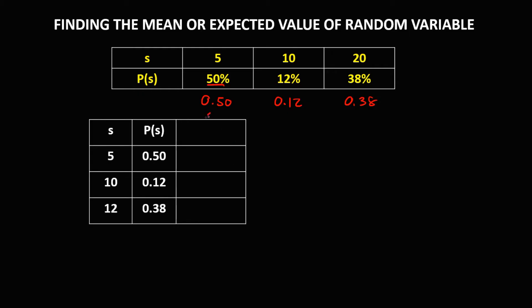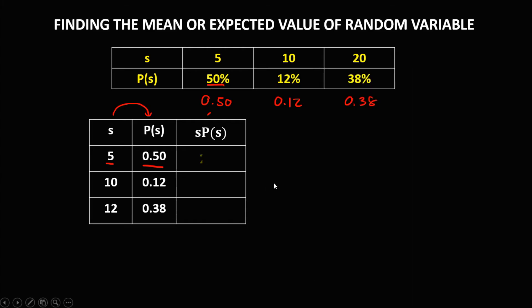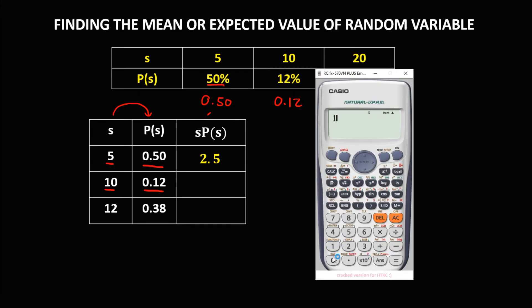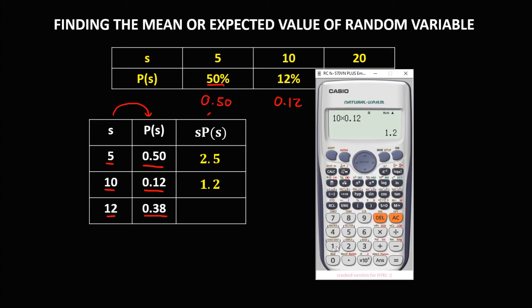To solve for this column, multiply s times p(s). Then to find the values: 5 times 0.50, that's 2.5. Then 10 times 0.12, that's 1.2. And 12 times 0.38, that's 4.56.